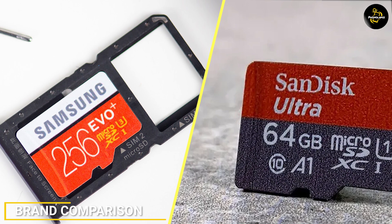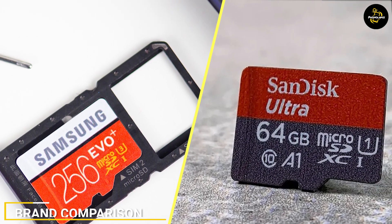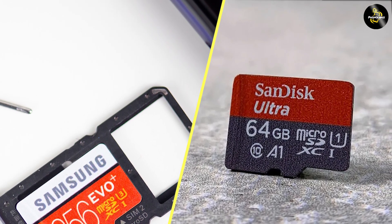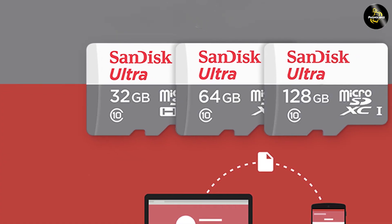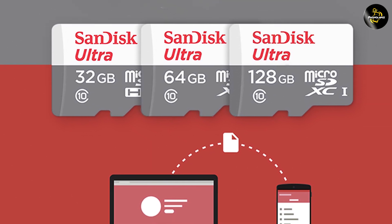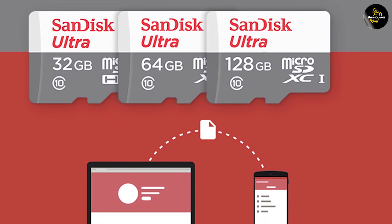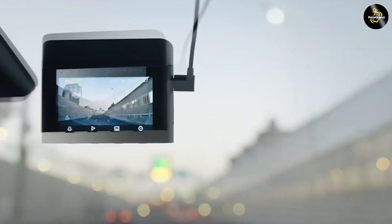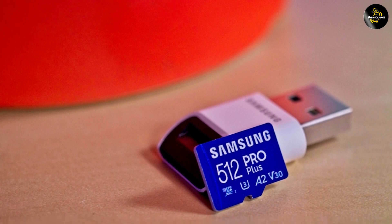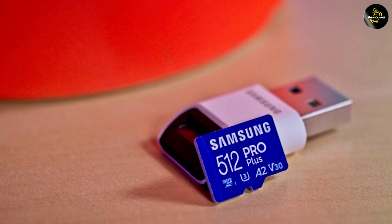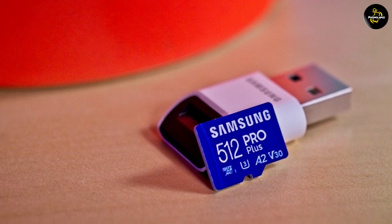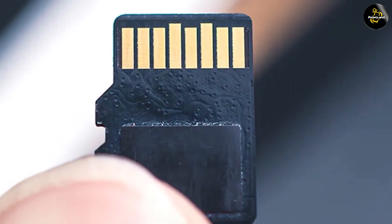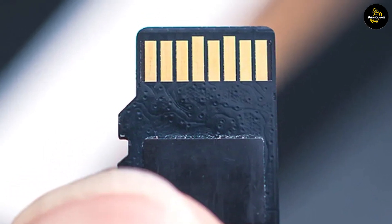Brand comparison. Now let's compare two of the top brands in the market: SanDisk and Samsung. SanDisk offers both ultra micro SD cards and regular micro SD cards with various storage capacities and read and write speeds. Their ultra micro SD cards are designed for high performance devices such as 4K UHD video cameras and gaming consoles. Samsung also offers both ultra micro SD cards and regular micro SD cards with similar features and specifications. Their ultra micro SD cards are designed for fast read and write speeds to support 4K UHD video recording and playback.